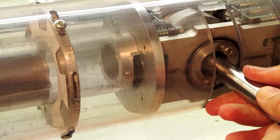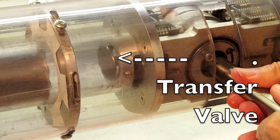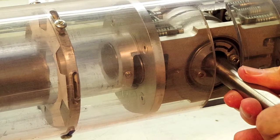Then, just before the end of the power stroke, the transfer valve at the bottom of the combustion chamber opens and transfers the combustion gases into the secondary expansion chamber.